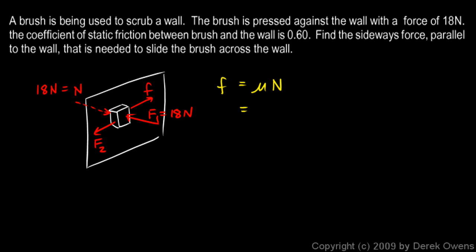So our answer is just μ times N and we know μ is 0.6 and we know N is equal to F1 which is 18 newtons. And so that's it. Multiply 0.6 times 18 you get 10.8 newtons and you're done.